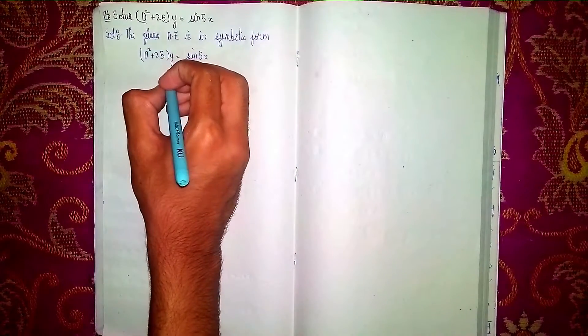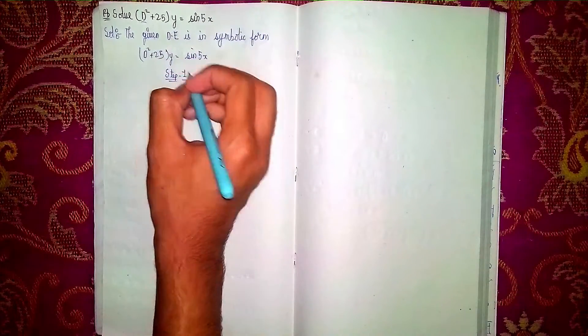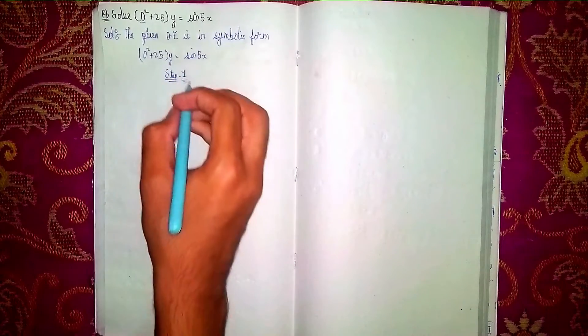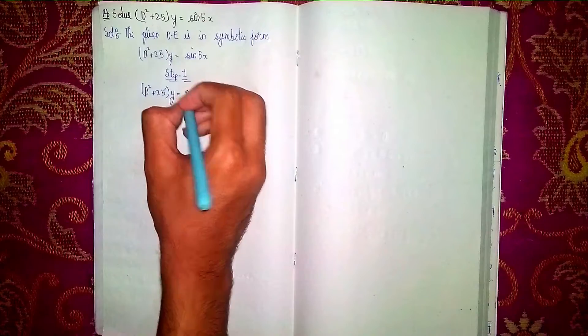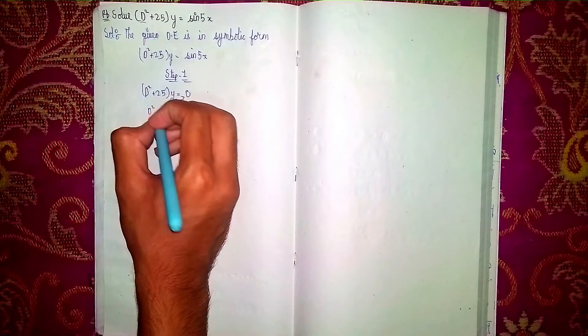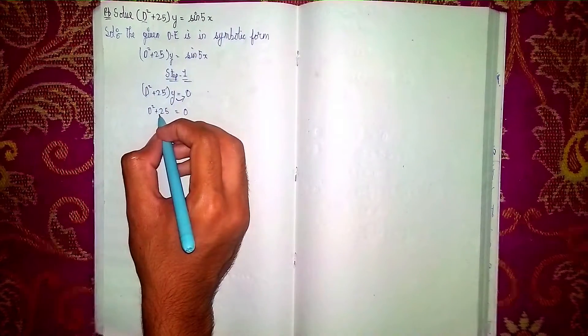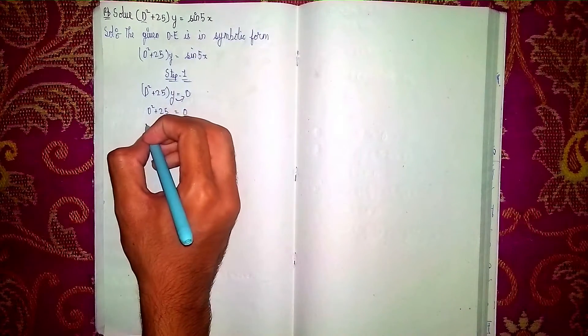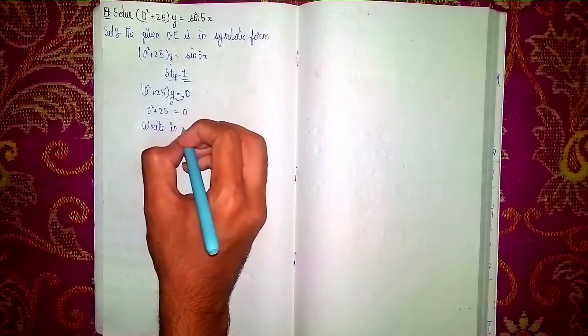Step one is to find the complementary function. For the complementary function, I take the LHS first: D squared plus 25 into y, and consider the RHS equal to 0 to find the roots. So our equation becomes D squared plus 25 equals 0. Now write this equation in auxiliary form.